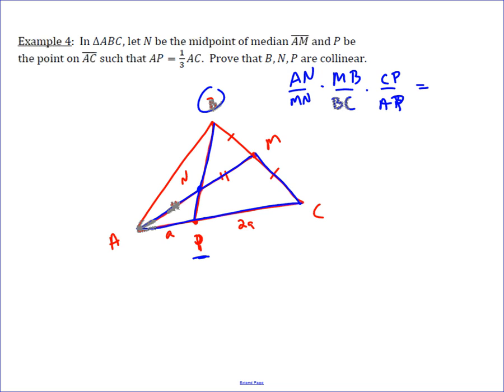If this product equals one, then the three points are collinear. These ratios are straightforward: AN over MN equals one. Since M is a midpoint, MB over BC equals one-half. And CP to AP equals two over one from the given information.